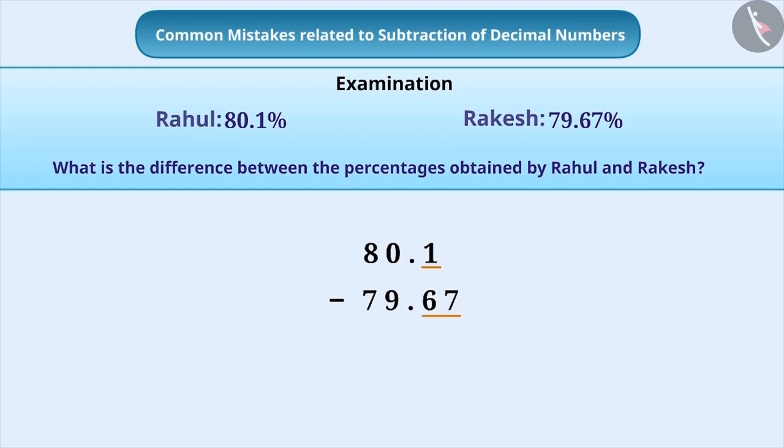They think that subtracting 7 from the blank above gives the result of 7 only. So they write 7 in the result. Then they do the subtraction of the remaining digits. This is also incorrect.